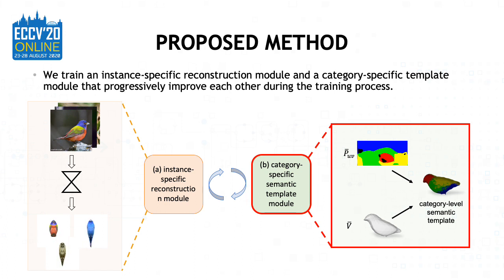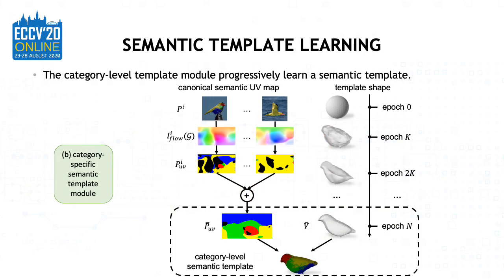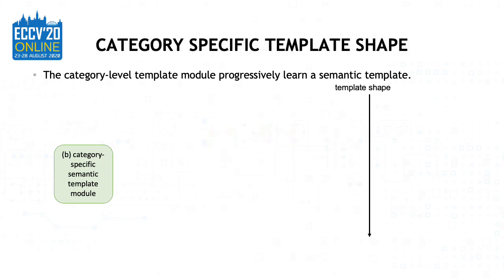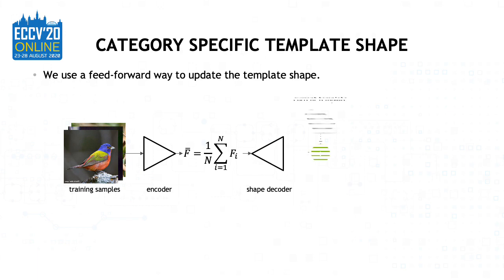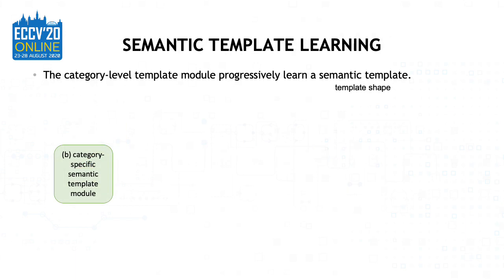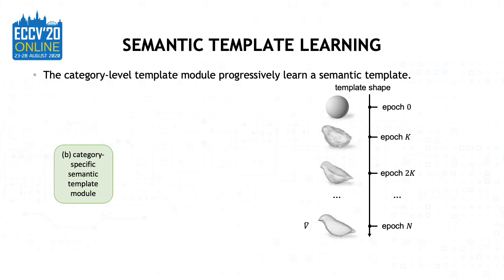Next, we will introduce how to learn a template by using the instance-specific reconstruction module. Here is an overview of how to learn the semantic template. The final output of this module is a category-level semantic template. To learn a template shape, we start from a sphere and update it every few epochs. Each time we update the template, we first use the encoder to extract the features of all training samples, and then feed the averaged feature to the decoder. The output of the decoder is used to update the current template to a new template. We perform this shape update periodically, and eventually get a template that captures general characteristics of the category.